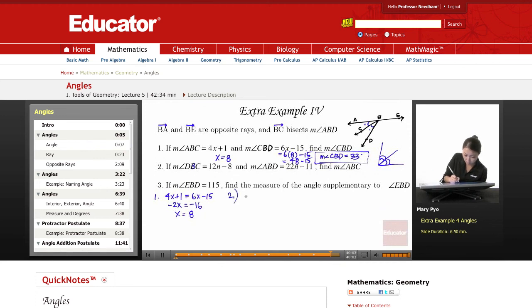Number 2 is 2 times 12N minus 8 equals 22N minus 11. So this is going to be, I will use distributive property. This is 24N minus 16 equals 22N minus 11. If I subtract this, I get 2N, add it over, I get 5. So N equals 5 over 2.